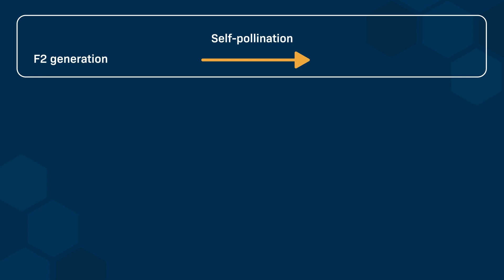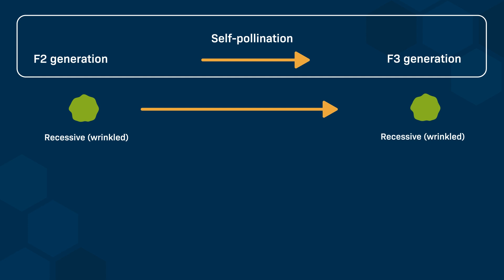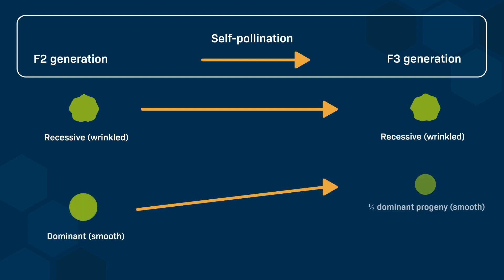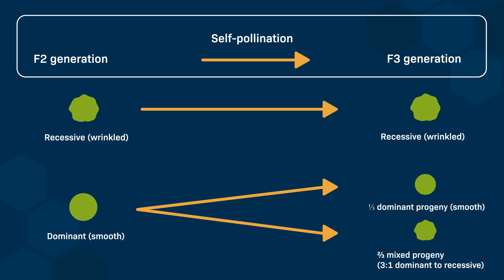The full set of Mendel's experiments included self-pollination of all the progeny obtained in F2, to get the F3 generation. The results were the following: all the F2 peas with recessive traits (wrinkled) produced only F3 peas with the recessive traits. The peas with the dominant trait (smooth) produced F3 progeny divided into two groups — one-third produced peas with only the dominant trait (smooth), and two-thirds produced a mixed progeny with the previously observed 3-to-1 ratio of dominant to recessive.